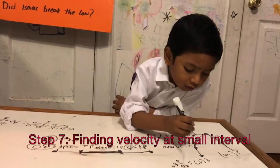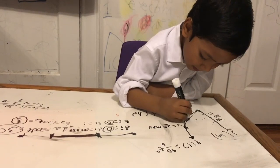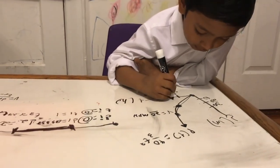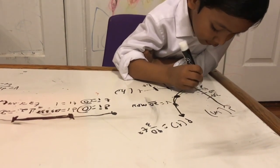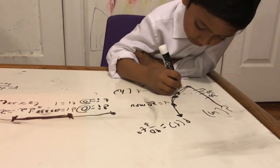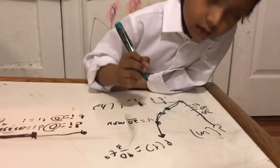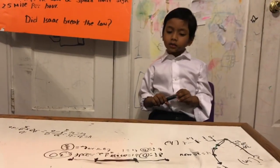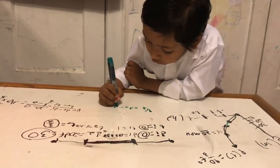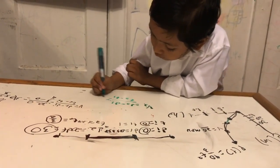Now I want to do the small interval. On the coordinate, T2 is 1.221 and T1 is 1, which comes to D equals 13.33. I want to draw 3 lines and find the velocity of the line: D2 minus D1 over T2 minus T1.